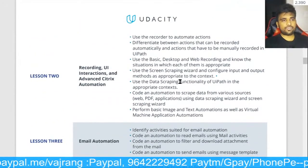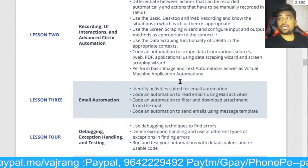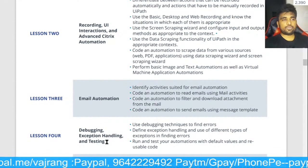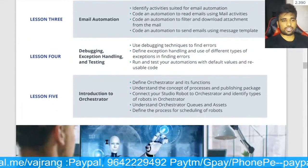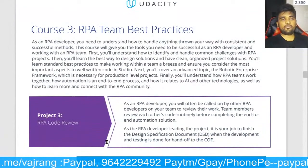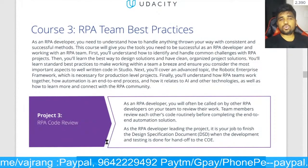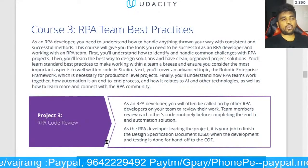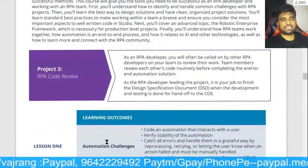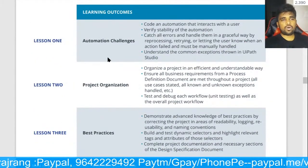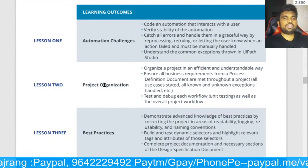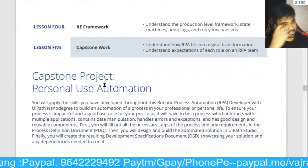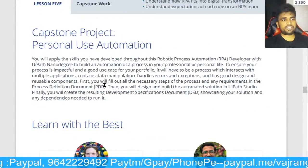In lessons two and three we have projects. Project two covers email automation, UI recording, debugging, and Orchestrator. The third project is about best practices — how to do a code review for yourself, handle automation challenges, and organize a project. That's what's covered in this course.